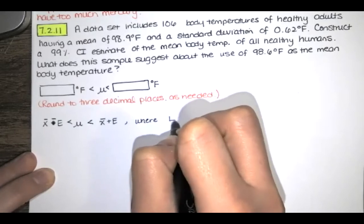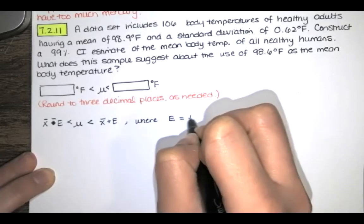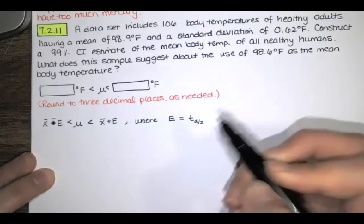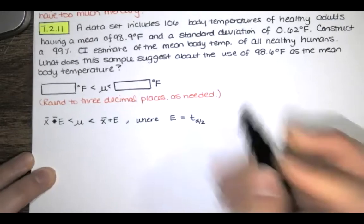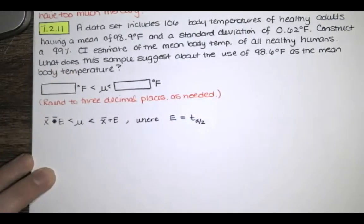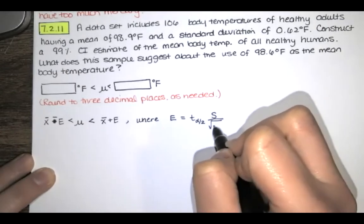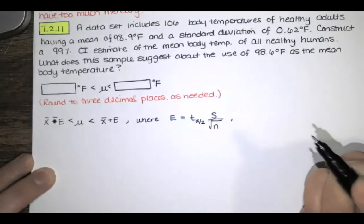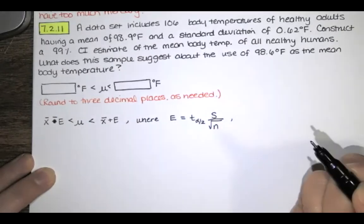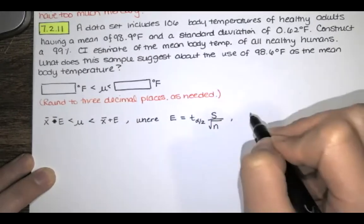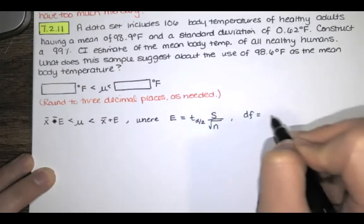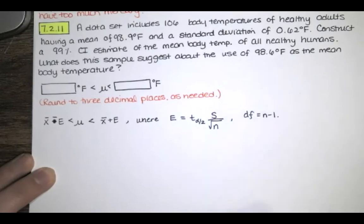where the margin of error is given by t sub α/2, which depends on the level of confidence. We have a 99% confidence interval, times the standard deviation of our sample, divided by the square root of the sample size. We also need degrees of freedom to choose the correct T distribution. The degrees of freedom are given by n minus 1.